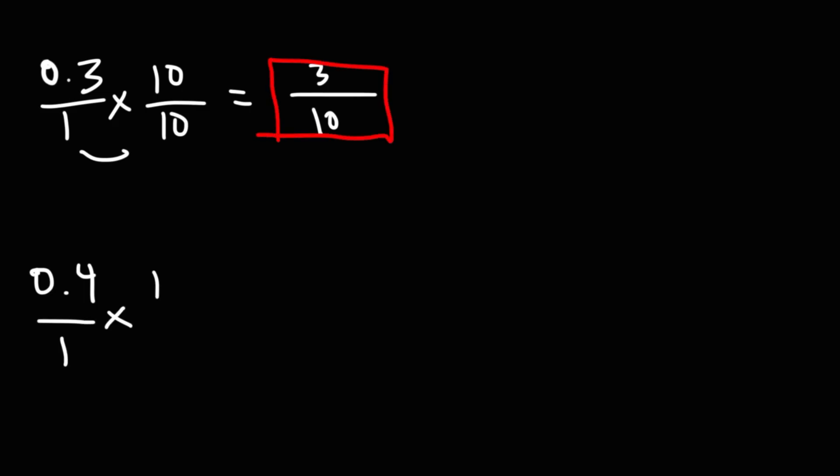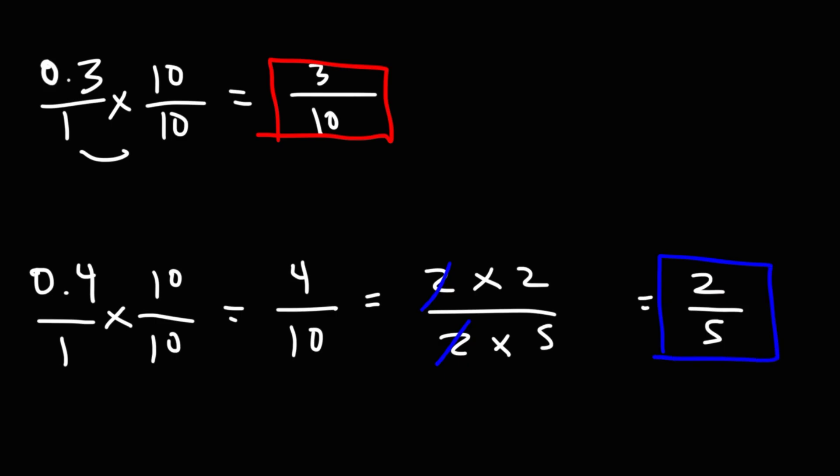For the next one, we're going to do the same thing. 0.4 times 10 is 4, 1 times 10 is 10. But for this one, notice that we can reduce the fraction. 4, we can write that as 2 times 2. 10 is 2 times 5. And we could cancel a 2 and simplify the fraction to 2 over 5. So 0.4 as a decimal is 2 fifths. So you always want to check to see if you can reduce the fraction to a simpler fraction.